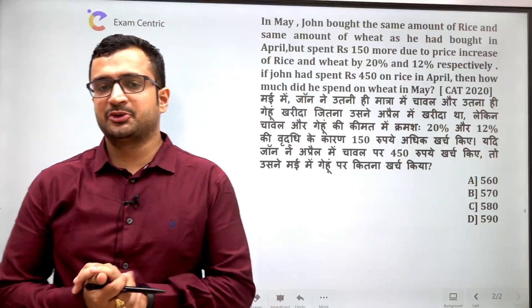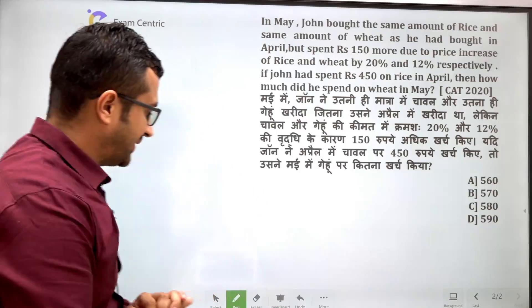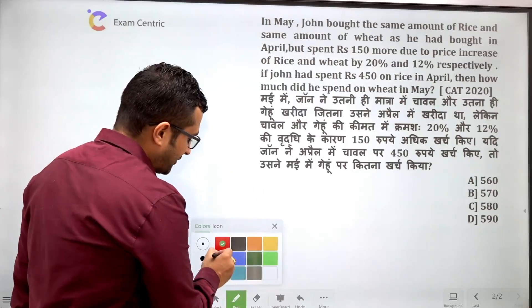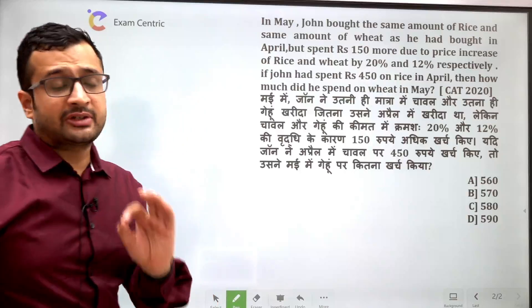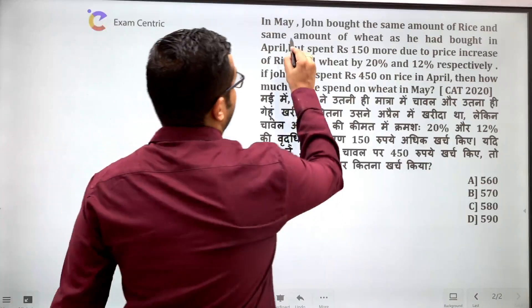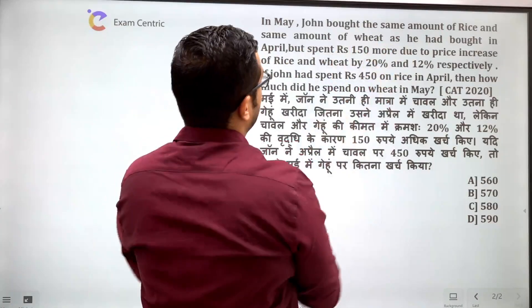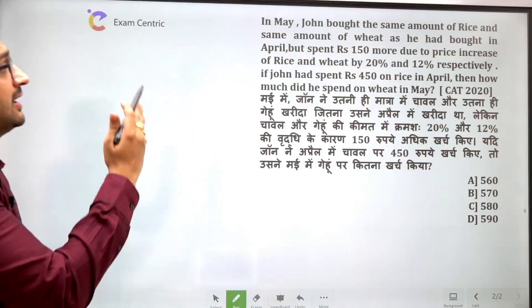Hello friends, in this session we will see a question from CAT 2020 and a short trick to solve it. First, let's read the question: In May, John bought the same amount of rice and the same amount of wheat as he bought in April.